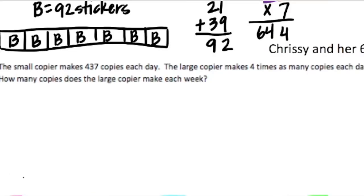Number 2. The small copier made 437 copies each day. The large copier makes 4 times as many copies each day. How many copies does the large copier make each week? So we need to figure out how many copies. Copies is the units. The large copier makes each week. They tell us that the small copier makes 437 each day, and the large copier makes 4 times as much as that each day.